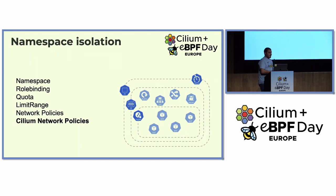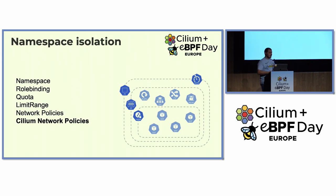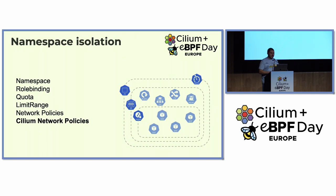We rely on Kubernetes namespaces and a couple of Kubernetes primitives to provide minimal isolation within the cluster. For this, we use the concept of a namespace profile template, which is made of a few Kubernetes objects such as Kubernetes namespace, rolebinding, quota, limit range, network policies, and Cilium network policies. We use Cilium network policies because by default we need DNS-based policies and other Layer 7 policies.